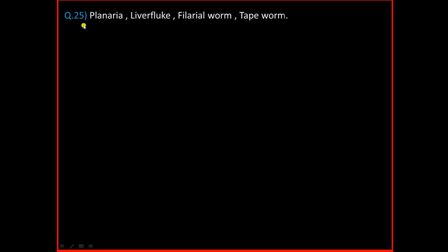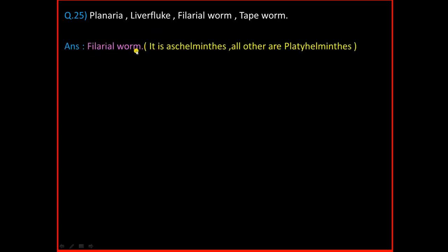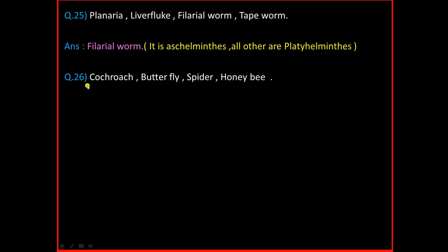Question Number 25: Planaria, Liver Fluke, Filaria Worm, Tapeworm. And the answer is Filaria Worm. Filaria Worm is a round helminth (Aschelminthes) and all others are Platyhelminthes.